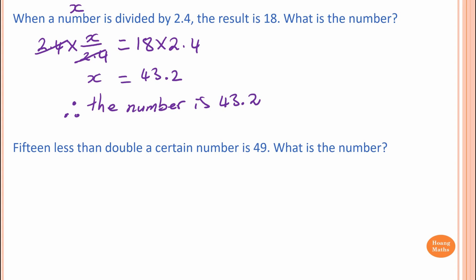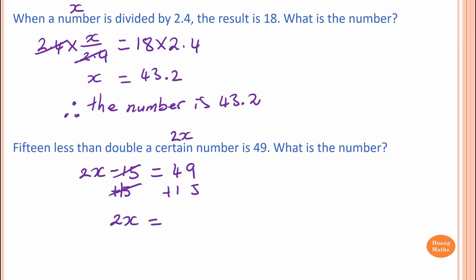Second one: 15 less than double a certain number. So this is x, and we double that — so 2x. We go 2x minus 15, and the answer is 49. To solve this equation, we add 15 on both sides — that disappears. So 2x equals 64. Then we halve that. So x is equal to 32. Therefore, the number is 32.